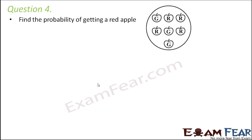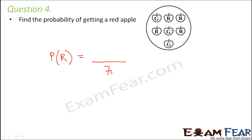Question number four: find the probability of getting a red apple. In the picture there are some red apples and some green apples. The total number of apples is seven, and the number of red apples is four. So the probability of getting a red apple is four by seven.